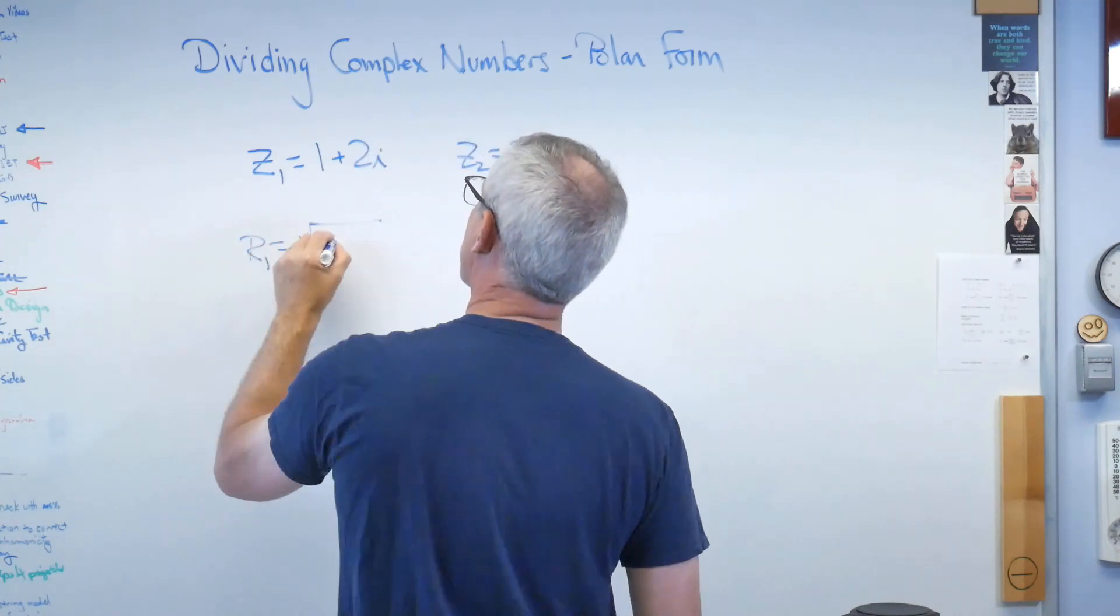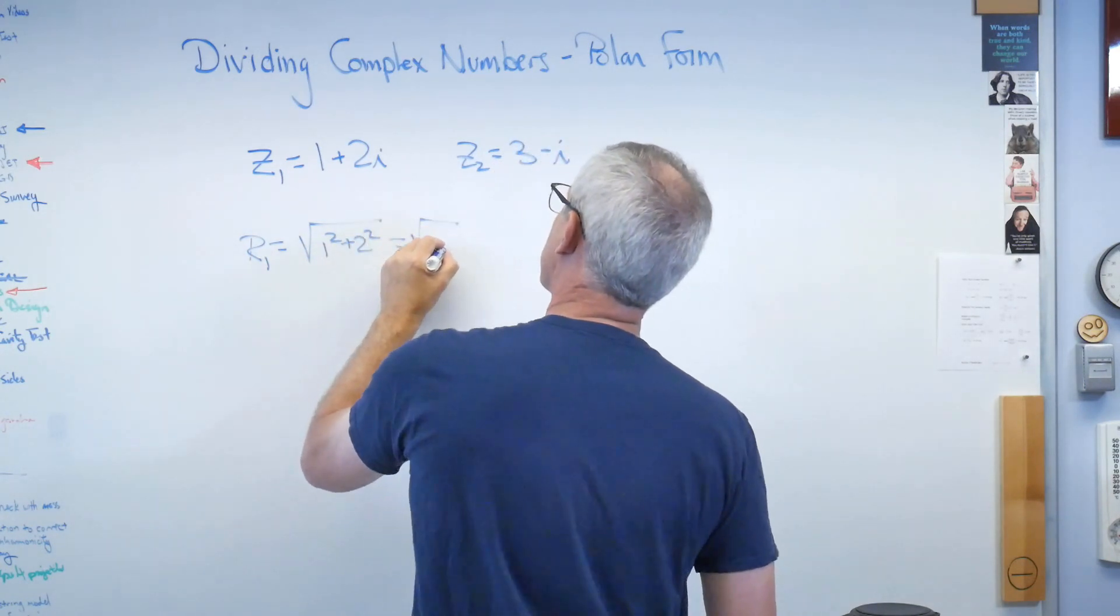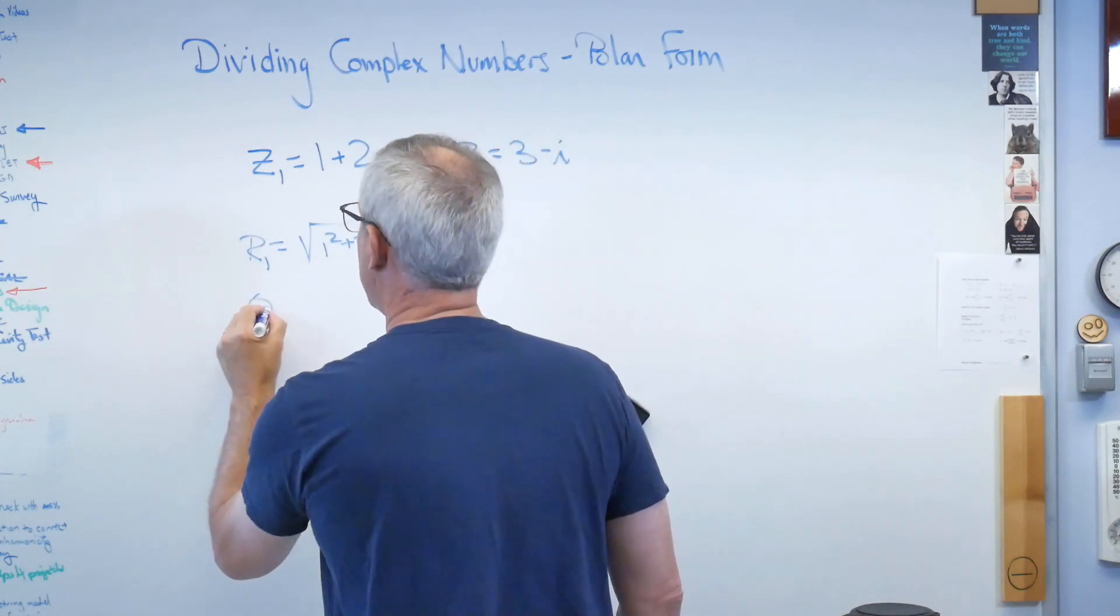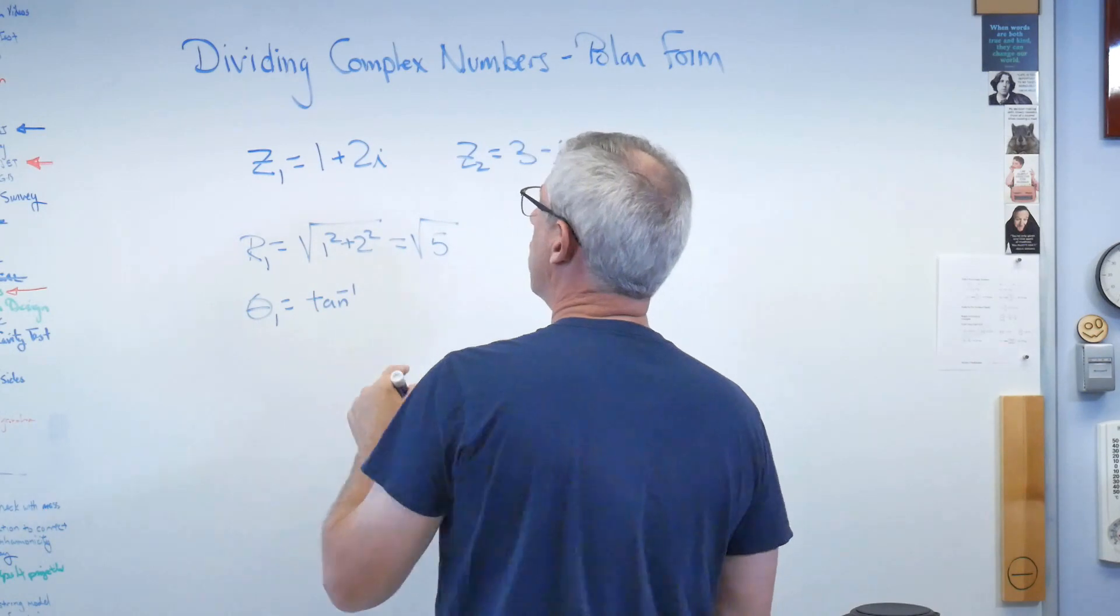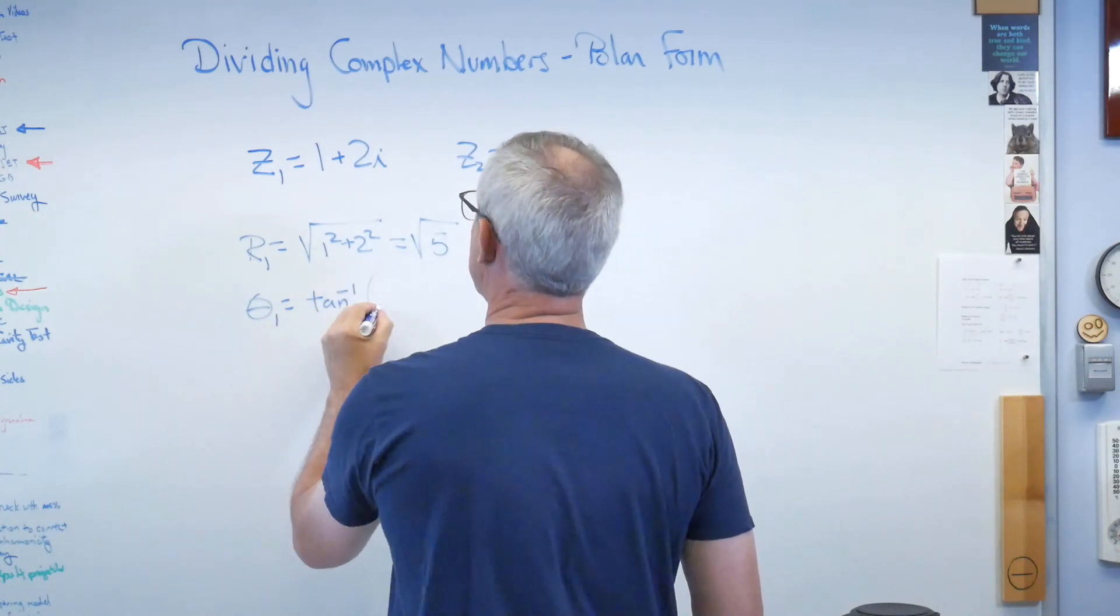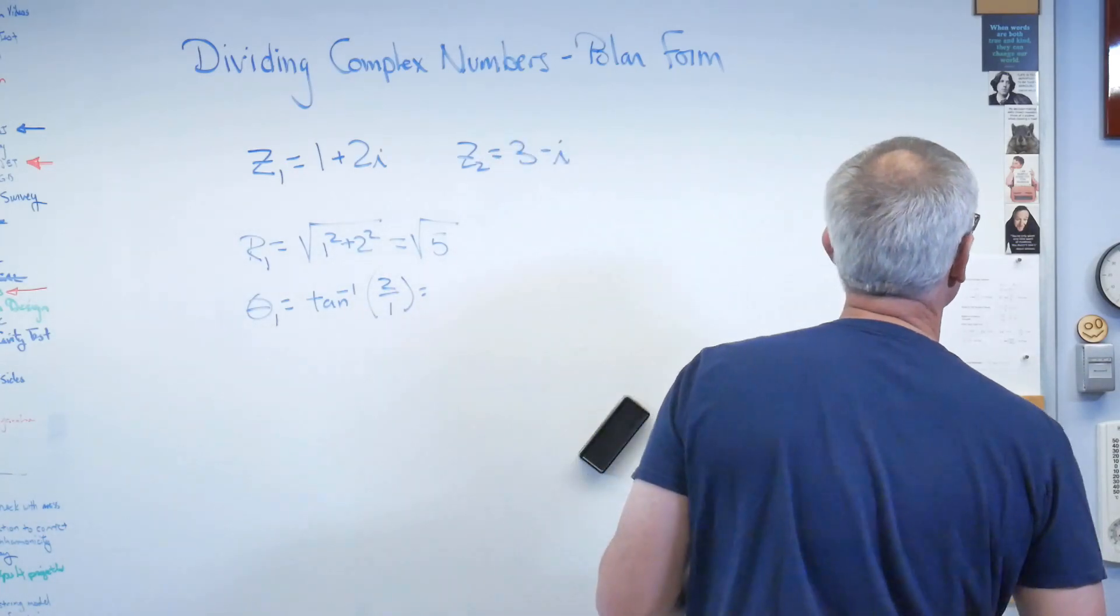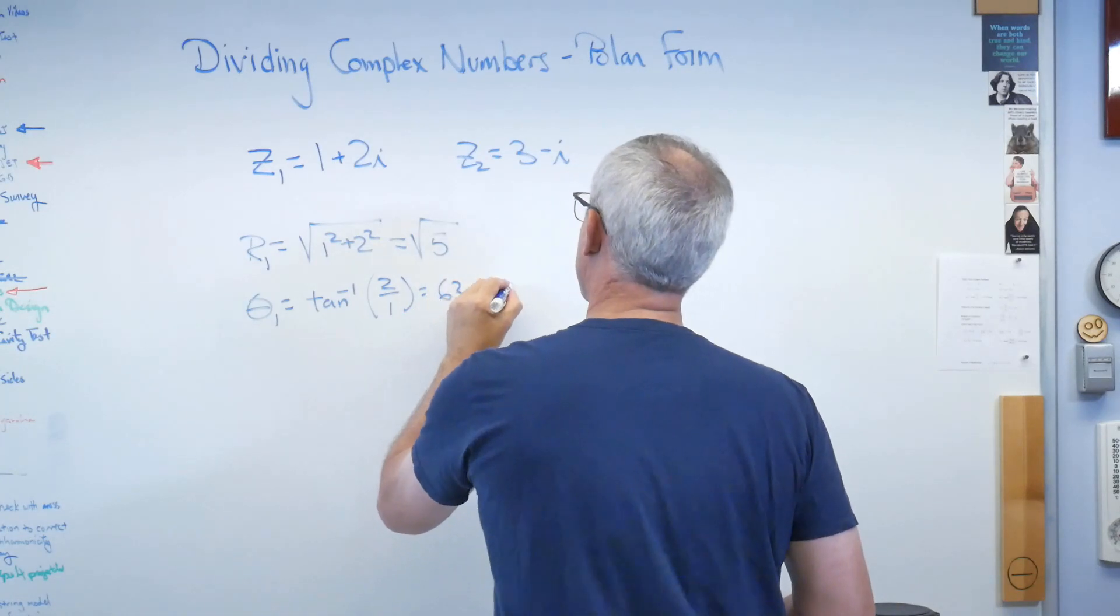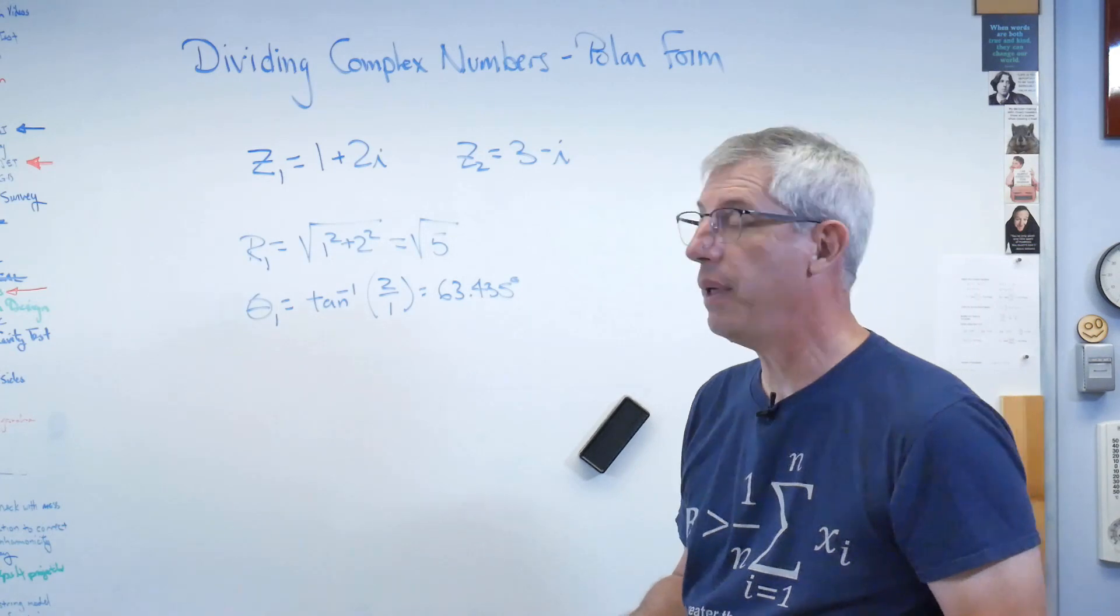r1 is going to be the square root of 1 squared plus 2 squared. That sure looks like the square root of 5 to me. And then theta1 is going to be the inverse tangent of vertical divided by the horizontal, opposite over adjacent if you keep track of that kind of thing. And that turns out to be 63.435 degrees. So there's r1 and theta1.